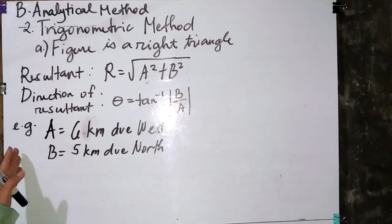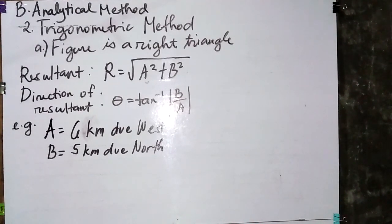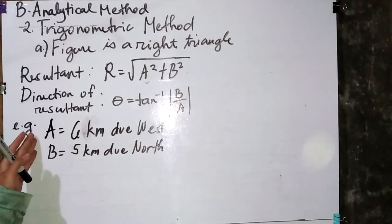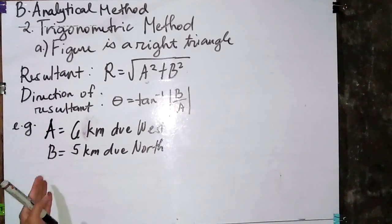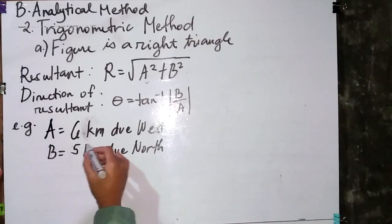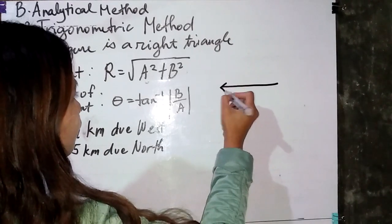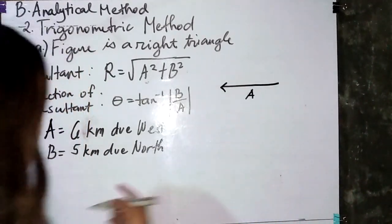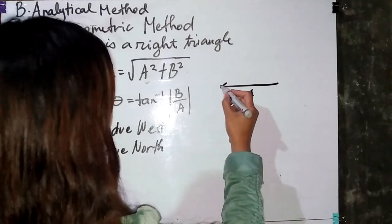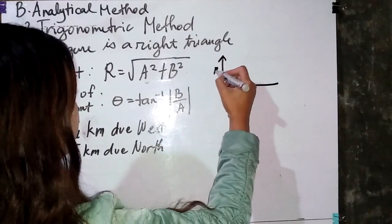Let's have an example with vector a and vector b. To know if these vectors form a right triangle, let's illustrate. Vector a is 6 kilometers due west, and vector b is 5 kilometers due north.